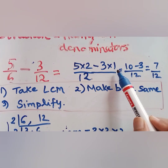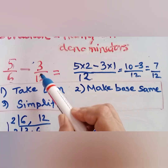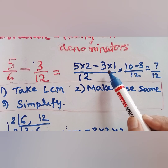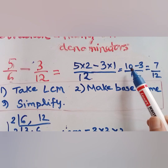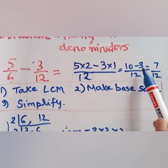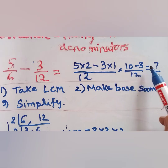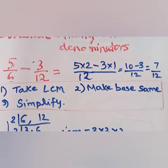We are multiplying numerator and denominator of 3 by 12 by 1, so it is 3 × 1. Now we simplify: 5 × 2 is 10, 3 × 1 is 3, divided by 12. So 10 minus 3 is 7, and the answer is 7 by 12.